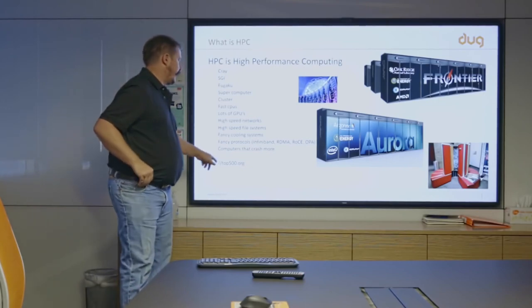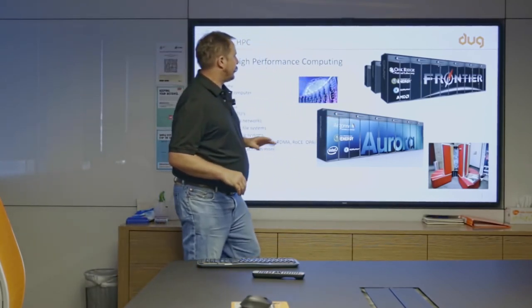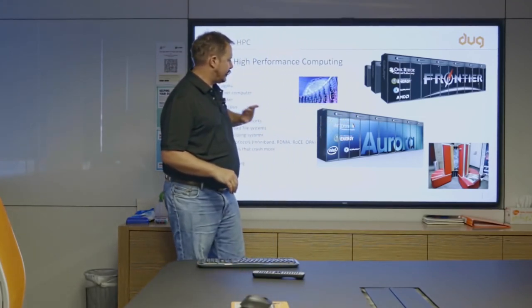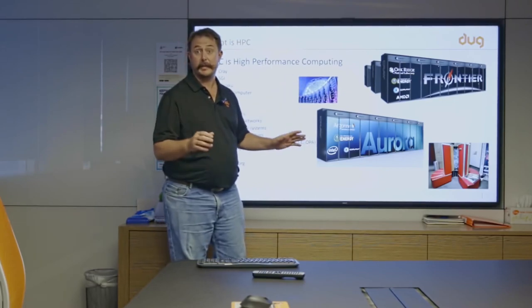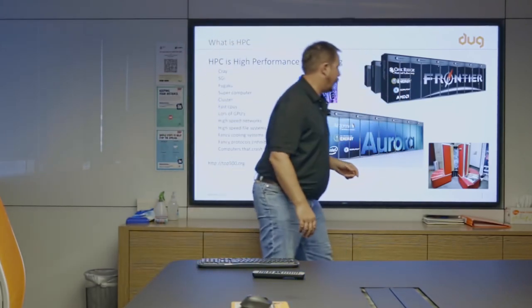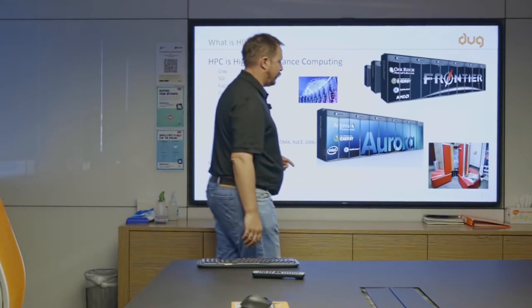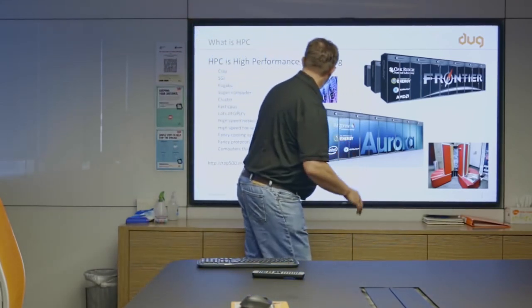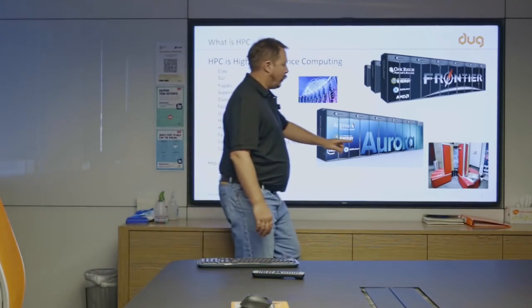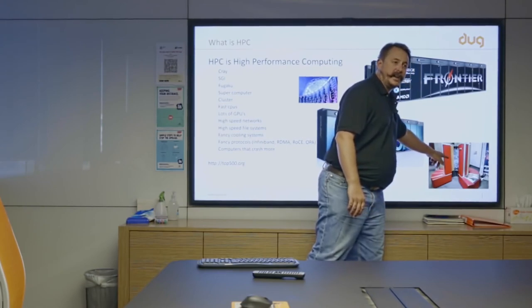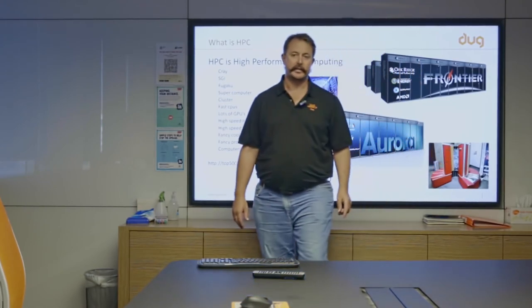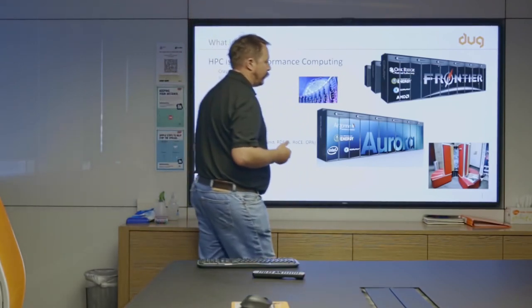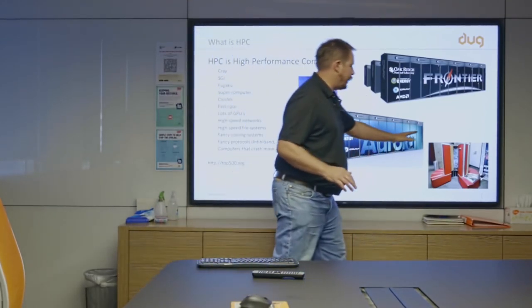You can jump online to top500.org and see some of these machines. Frontier and Aurora are leading contenders to be the first exascale computers this year or early next year. Here is the Cray machine that most people associate with supercomputers - a couch with bucket loads of cables inside in a C shape. This is where fancy cooling comes in. Late 70s, early 80s, they built it in a C shape to minimize cable distances and pack boards at higher density than before.